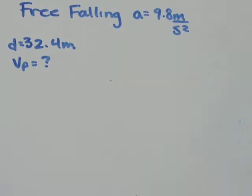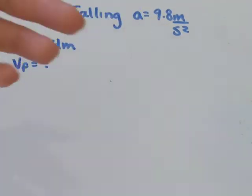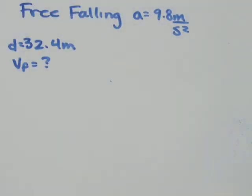So you can just assume it's 9.8 meters per second squared in all the questions that you're doing. So we've got the example, a stone is dropped 32.4 meters above a pond.